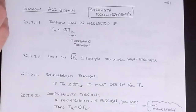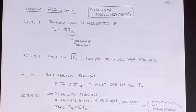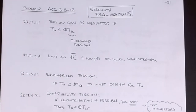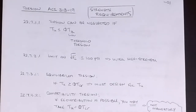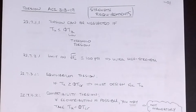Alright, we're looking at torsion and the ACI 318-19 code. I want to go over the basic strength requirements for torsion, and you'll see some very common similarities to what we did with shear. When we did shear analysis in concrete we were looking at a concrete contribution as well as a steel contribution. Overall it's not much different from the mid-90s up to now; there are just some terms that have changed.